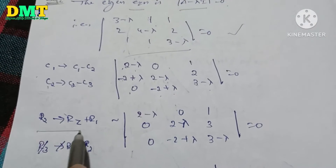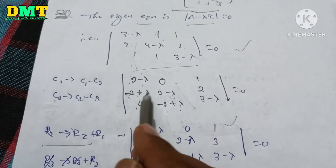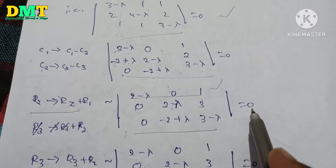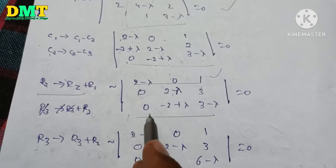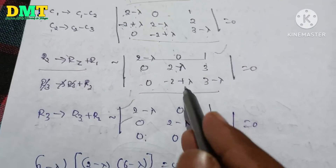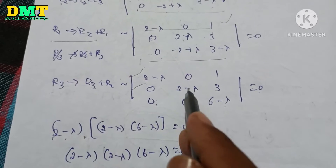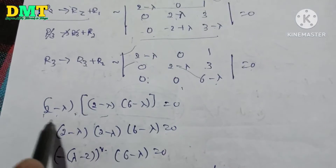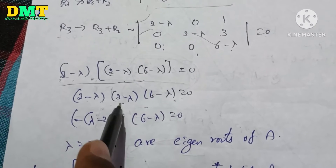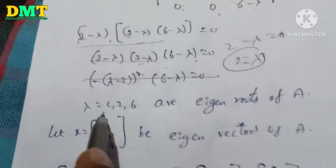So 2 minus lambda is equal to 0. Now row 3 equals 0. If row 3, we can change R3 plus R2. Same first and second row, 0 plus 0, 0 minus 2 plus lambda, plus 2 minus lambda cancel. 3 plus 3 is 6 minus lambda equal to 0. So (2 minus lambda) into (2 minus lambda) into (6 minus lambda) equals 0. Here minus lambda, (2 minus lambda) squared.